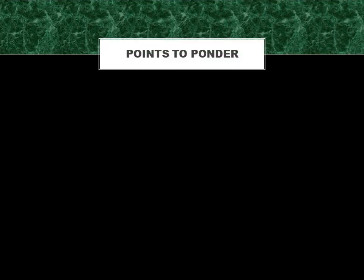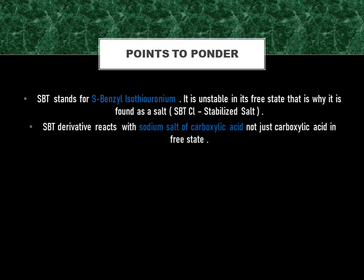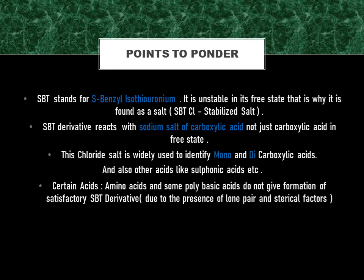Now we will revisit some important points from this experiment. SBT stands for S-benzyl isothiouronium — quite a fascinating name. It is unstable in its free state, that is why it is found as a stabilized salt, like SBT chloride. SBT derivative reacts with the sodium salt of carboxylic acid, not just carboxylic acid in its free state. This chloride salt is widely used to identify mono and dicarboxylic acids and also other acids like sulfonic acids. Certain amino acids and some polybasic acids do not give satisfactory SBT derivative formation due to the presence of lone pairs and steric factors.